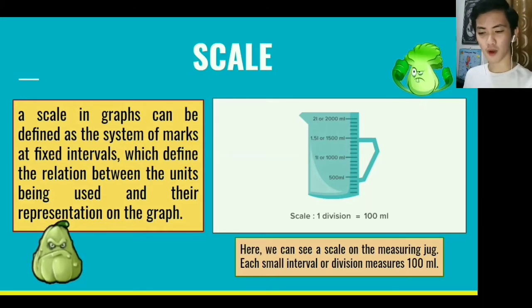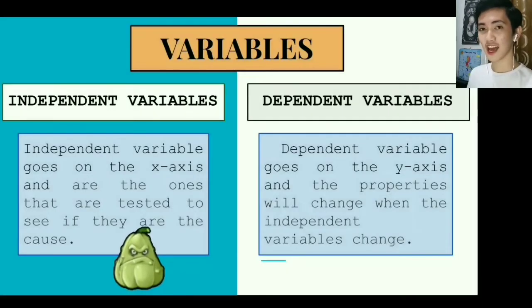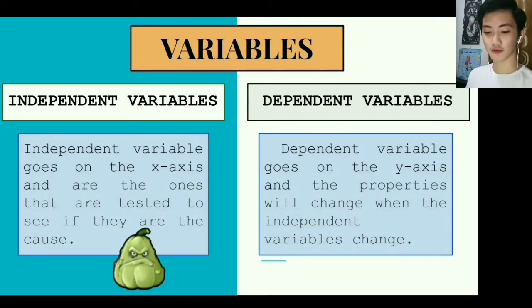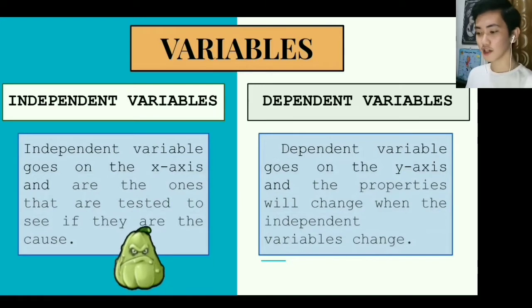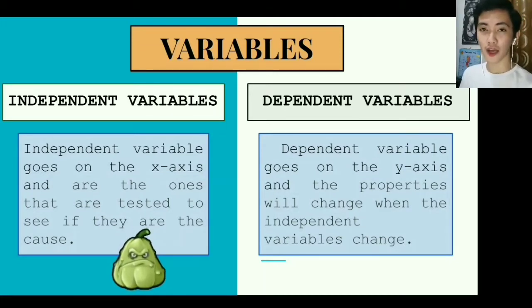Variables. What are variables? We have two types of variables here in our presentation: independent variables and dependent variables. Independent variables are the ones that are tested to see if they are the cause. This goes on the x-axis. Dependent variables are the properties that change when the independent variable changes. This goes on the y-axis.